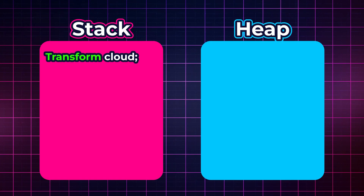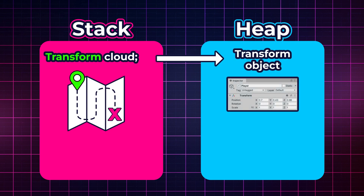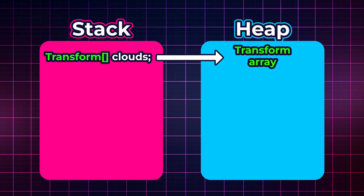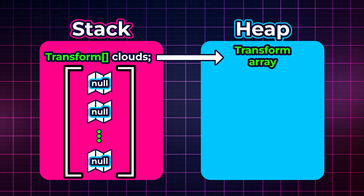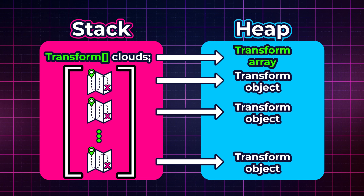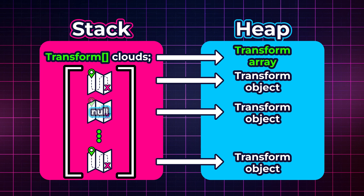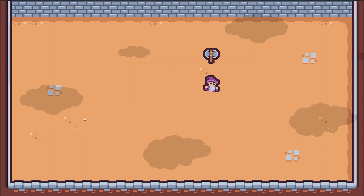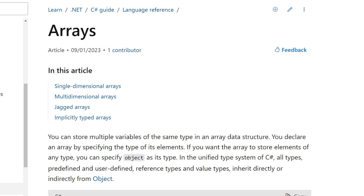If you recall, a variable representing an object is like a map. Now imagine that we can create a collection of slots where each one at the start is null — an empty map — and each can be connected to a transform of our cloud object. If we do that, we could go through this list or array, and unless the reference is null, we could make it move using the transform referenced by our collection.